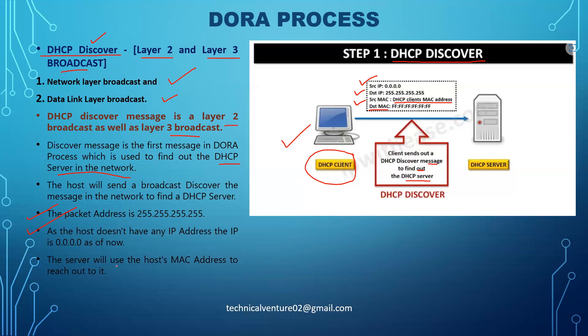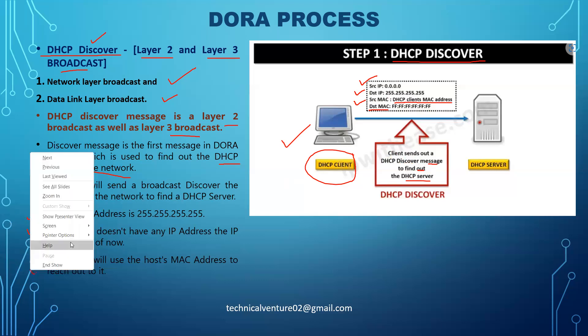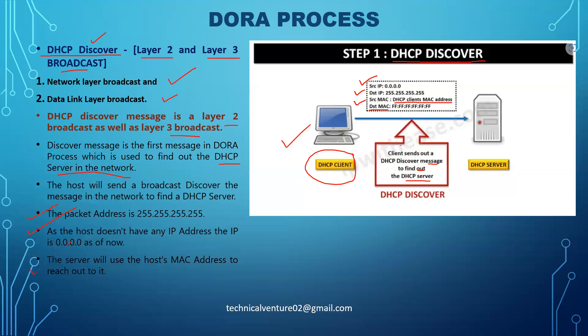The server will use the host MAC address from the source MAC field of the Discover message to reach out to the client. Now, when the DHCP server wants to send an Offer message to the client, it will get the destination information from the client's MAC address included in that source MAC field.